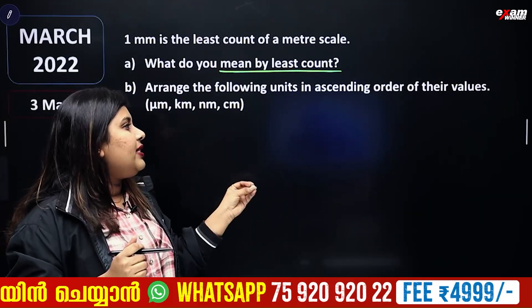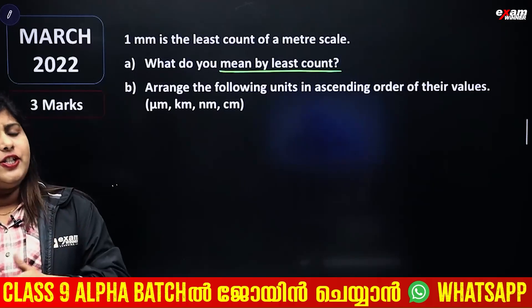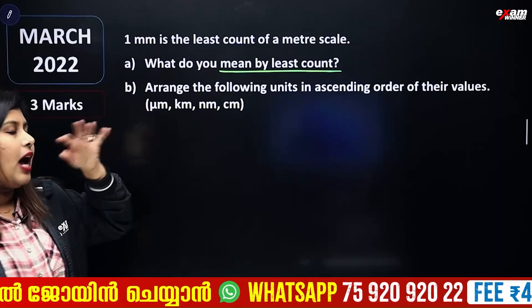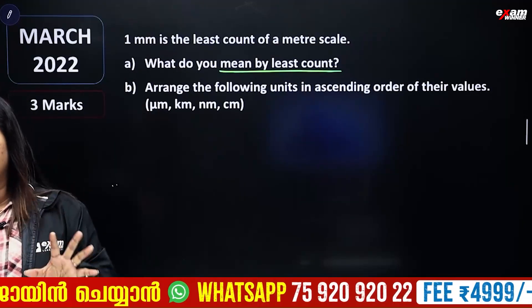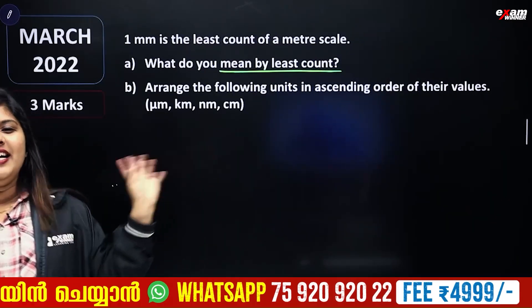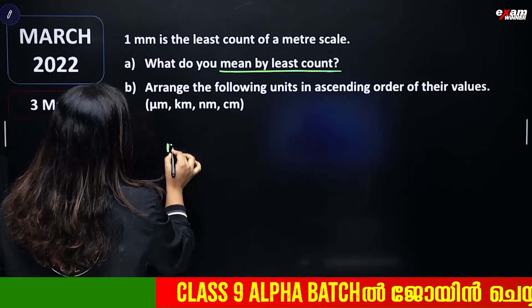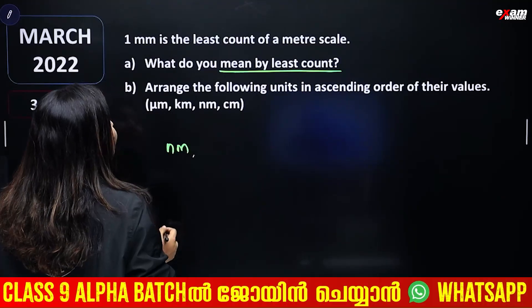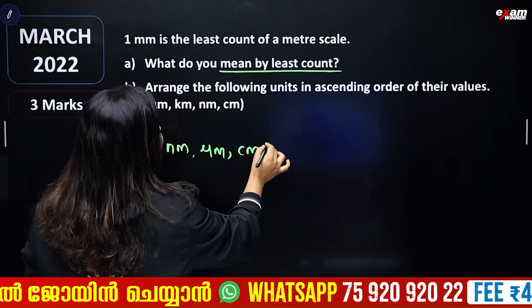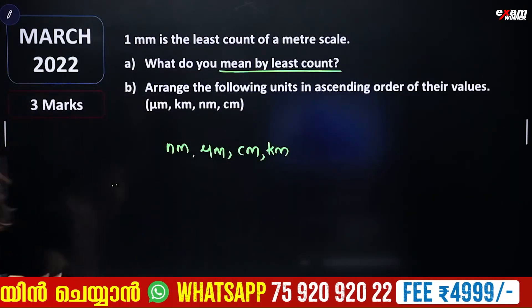Arrange the following units in ascending order of their values — from smallest to largest. The answer is: nanometer, micrometer, centimeter, kilometer.